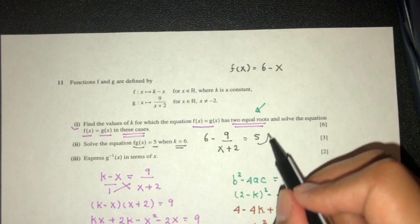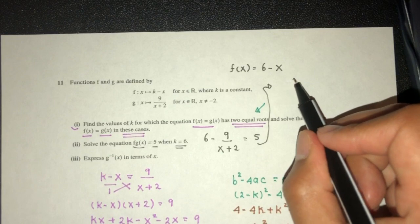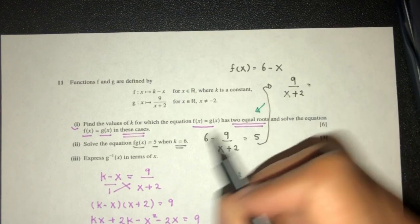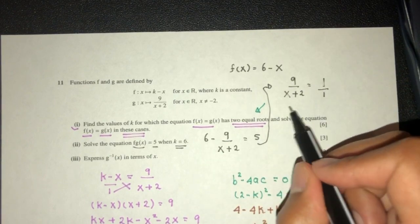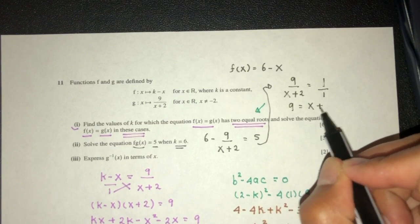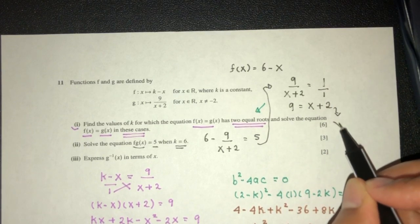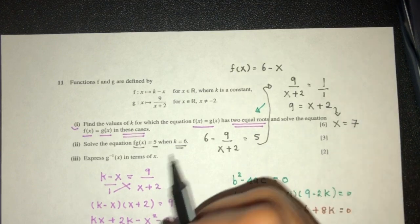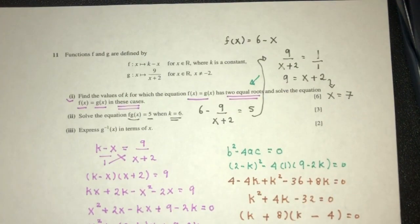So from this, continue. That should be 9/(x + 2). 6 - 5 is 1, so cross-multiply, you have 9 equal to x + 2. From this, you will have x equal to 7. This is 7 for part 2.